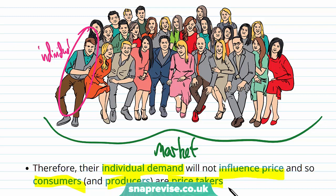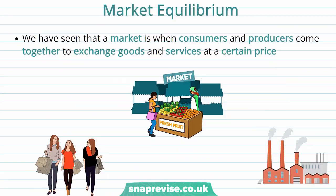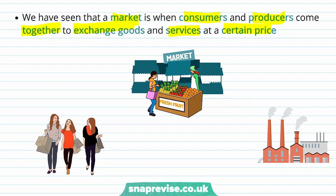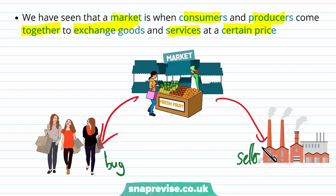Being a price taker means that individually we can't move up and down our own individual demand curves — we just have to take the price of something in the market. This is a pretty good assumption, seeing as an individual, as much as I would like the price of a new phone to go down, I can't influence that price. Now we get to talk about our market equilibrium. We have seen that a market is when consumers and producers come together to exchange their goods and services at a certain price, and our market is built up of our buyers and sellers, otherwise known as our consumers and our producers.